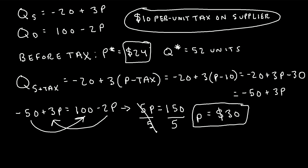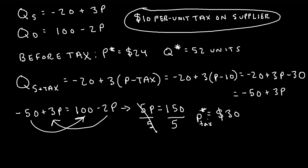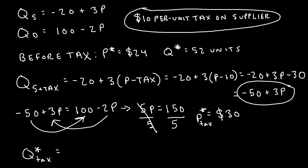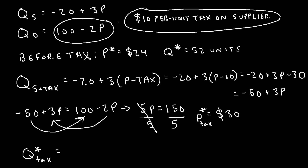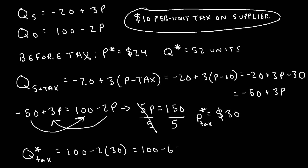We can see that the market equilibrium price has increased from 24 to 30. This is our p* sub tax, the market equilibrium price after the tax. Now to find the new q* sub tax, the new market equilibrium quantity, we plug 30 into the original demand equation: 100 minus 2 times 30 equals 100 minus 60, which is 40 units. So our new market equilibrium quantity is 40 units.